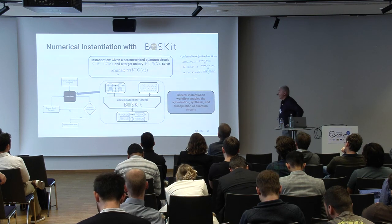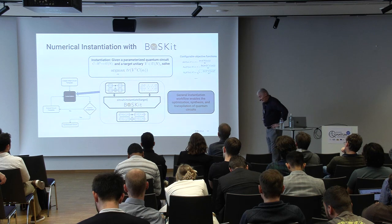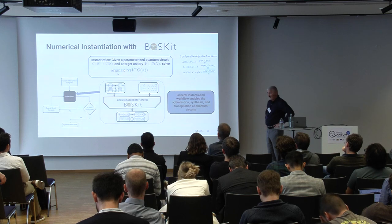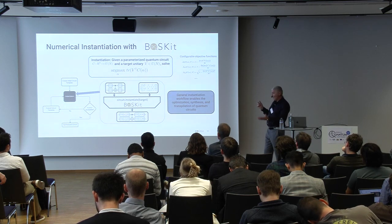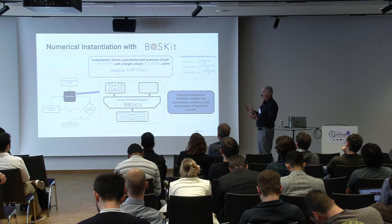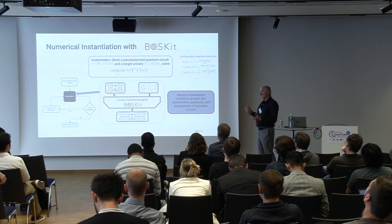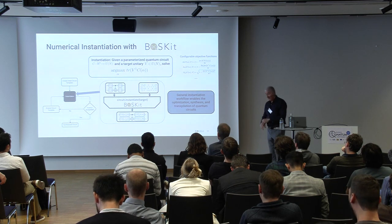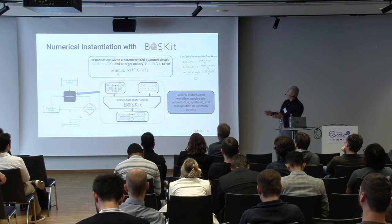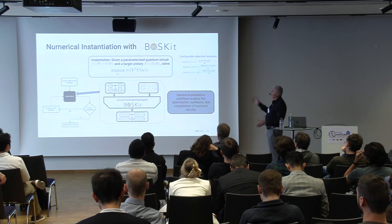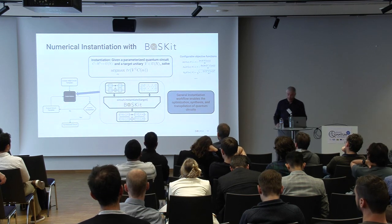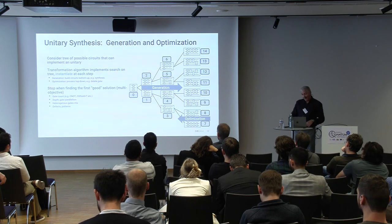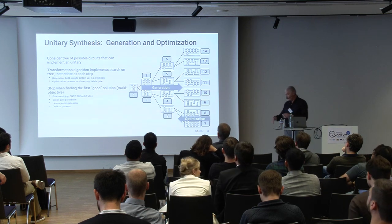At the base of our infrastructure and most of our transformations is this primitive operation of instantiation. You have a target program and a parametrized template. Numerical instantiation is solving numerically with a numerical optimizer for the parameters in the template such that it implements your target program. The objective function for the optimization is reconfigurable — you can plug in whatever you want. We use mostly Hilbert-Schmidt distances. This primitive enables us to have very complex workflows and transformations.